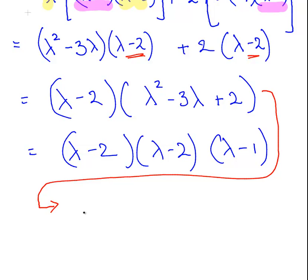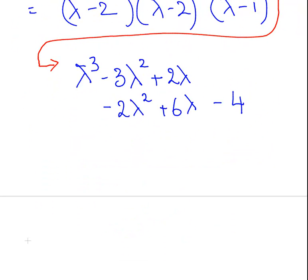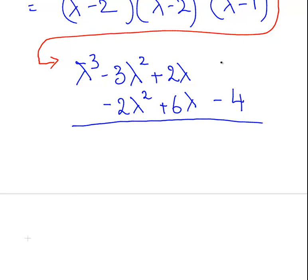So what I get when I multiply this out is lambda cubed minus 3 lambda squared plus 2 lambda minus 2 lambda squared plus 6 lambda minus 4. And when I add that up altogether, what I get is, when I simplify that, essentially what I get is lambda cubed minus 5 lambda squared plus 8 lambda minus 4.